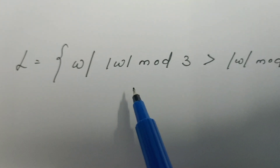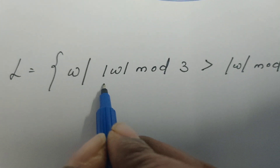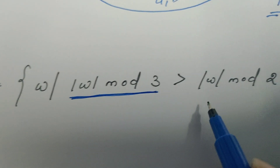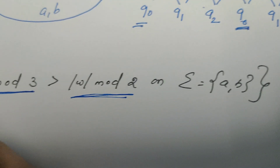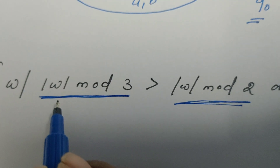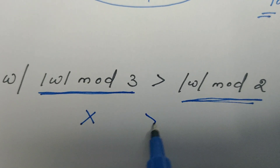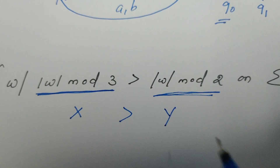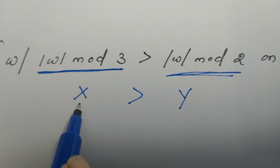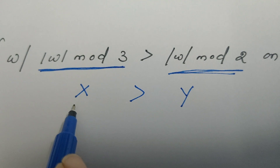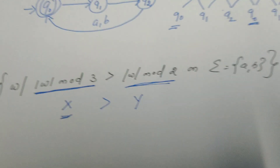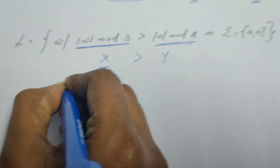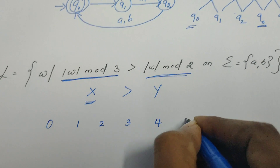The next problem is more interesting. We need to understand it intuitively. The condition is: length of w modulo 3 is greater than length of w modulo 2. If we divide the string length by 3, the possible remainders are 0, 1, or 2 — call this x. Dividing by 2 gives remainders 0 or 1 — call this y. The condition is x must be greater than y.